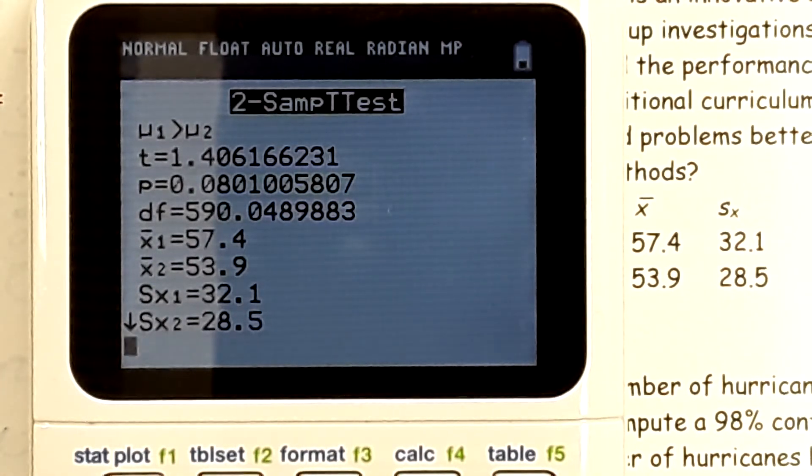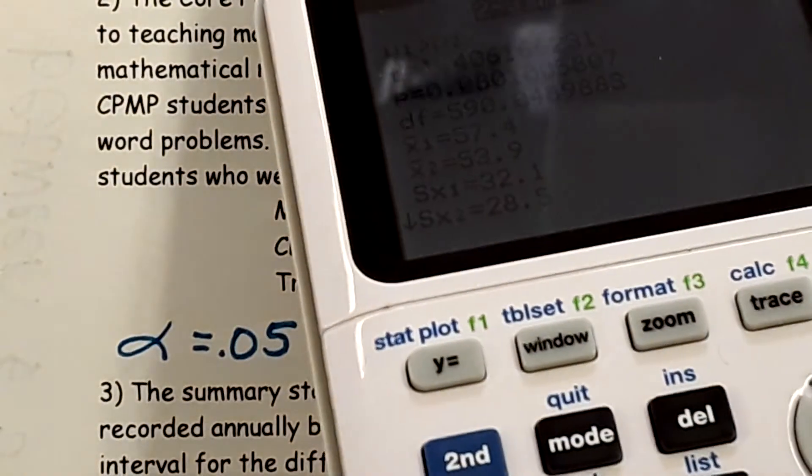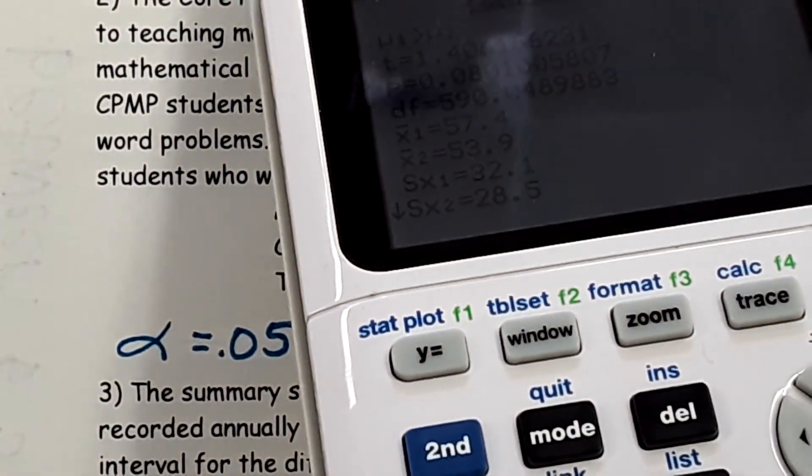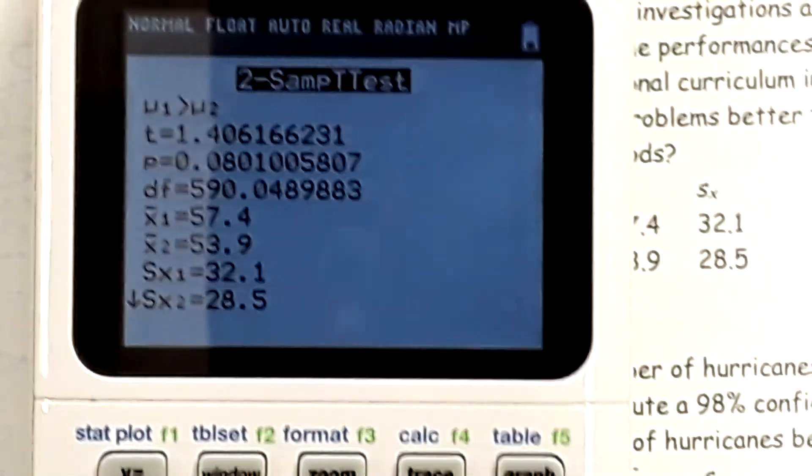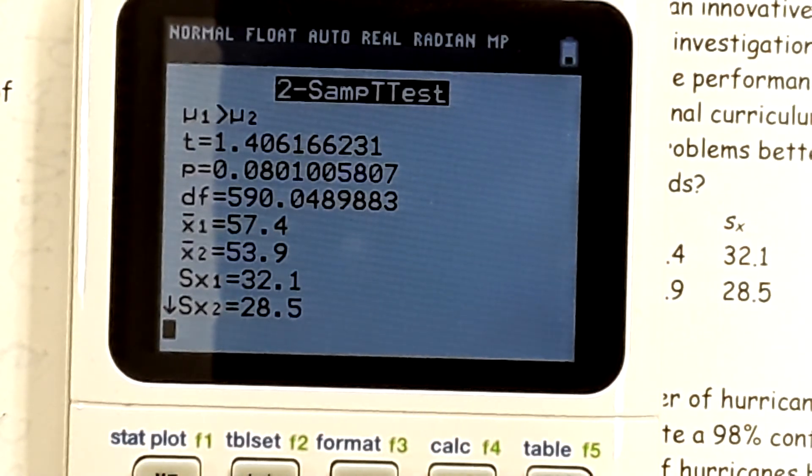And then number four is just another one like we just did, and they're asking you which one would be the worst error based upon what is the potential error, type 1 or type 2, and that's what you need to talk about. Okay.